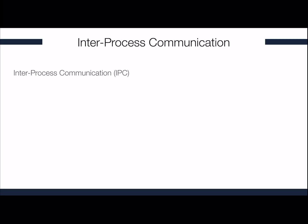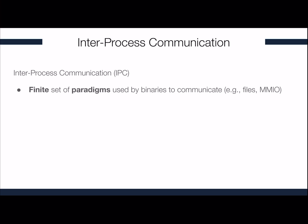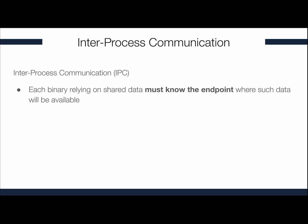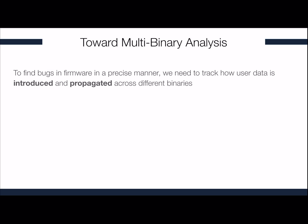So how do these different components actually communicate? They do so through what is called interprocess communication, or IPC, which is a finite set of paradigms such as files, MMIO, sockets, and so forth. An actual communication between two binaries is represented by what we call data keys — the endpoint where such data will be available for retrieval. In the example before, a data key was the environment variable query_string. Each binary that relies on some shared data must know in advance the endpoint where such data will be available, which means that data keys are usually hard-coded in the programs themselves. Therefore, to find bugs in firmware in a precise manner, we need to track how user data is introduced and propagated across the different binaries.